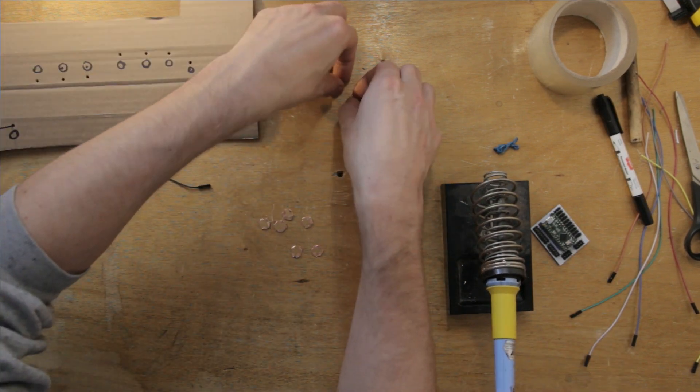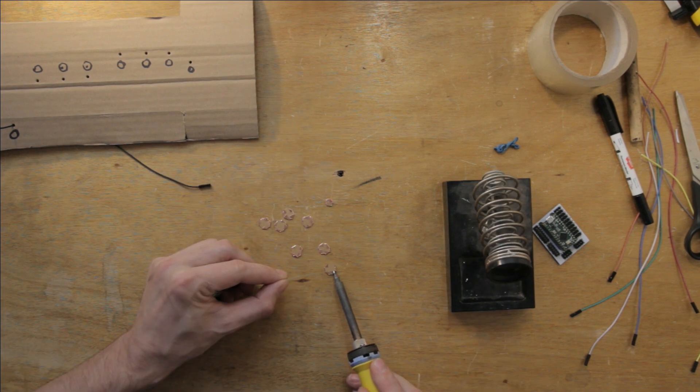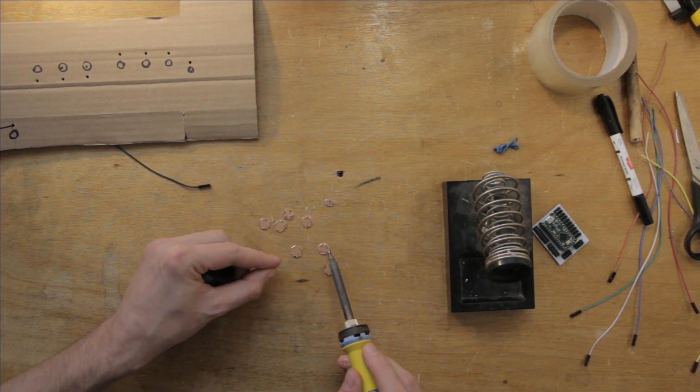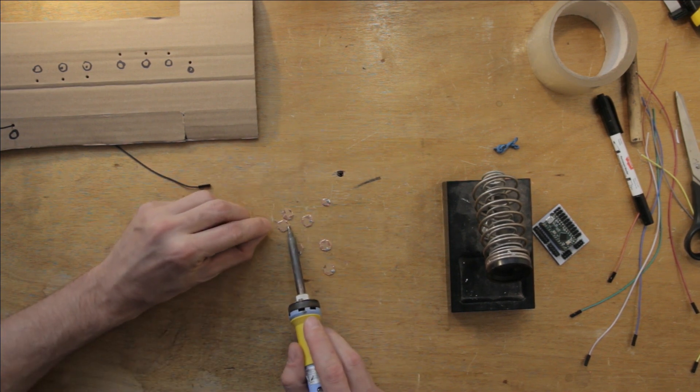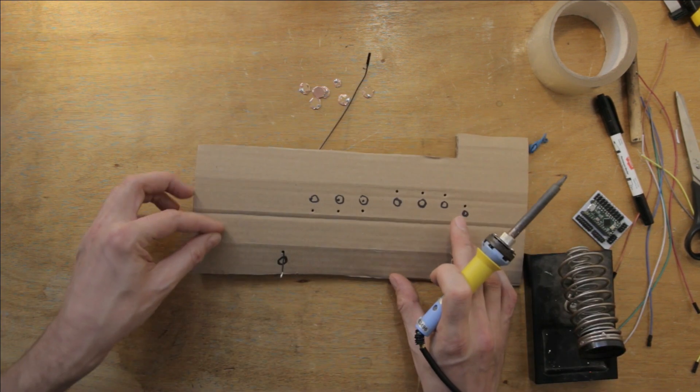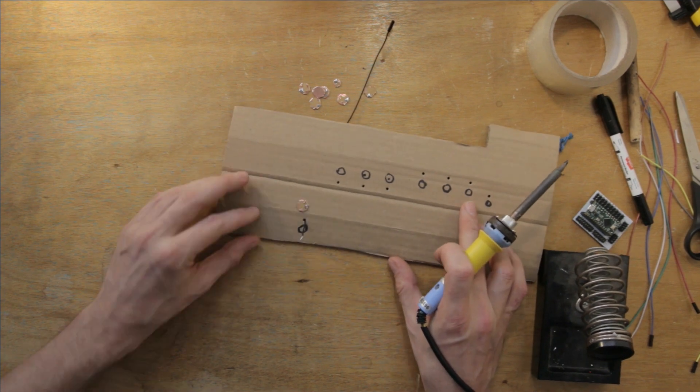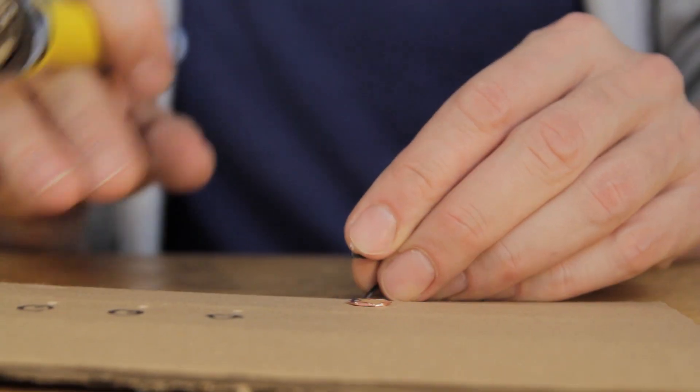I'll get out my trusty soldering iron, and I'll start out by putting a little bit of solder on each key, onto one of the corners of copper tape which I folded down to the underside before. This copper tape is super easy to solder to.